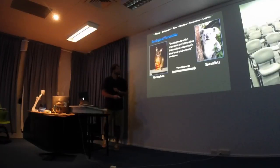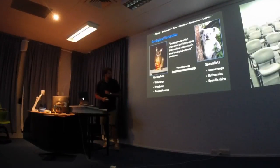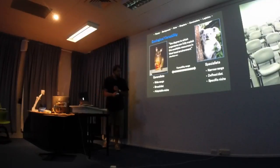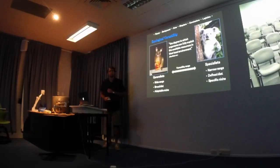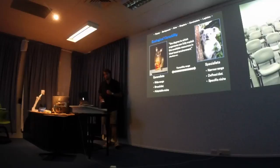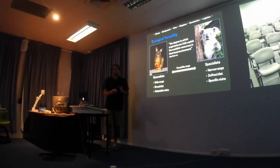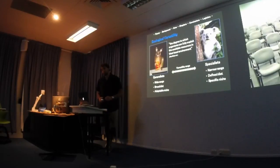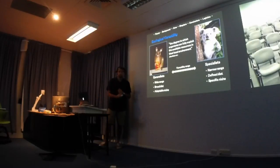A generalist, for example a possum, has a wide range and a very broad diet. It can be eating pizza from one trash can one night and switch to Chinese food the next night. It also has a very adaptable niche space — if you stop throwing away pizzas and start throwing away Indian food, it switches to Indian food.